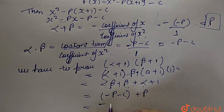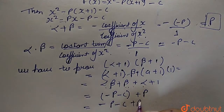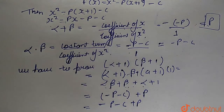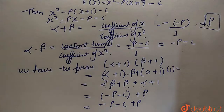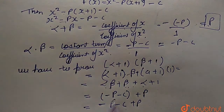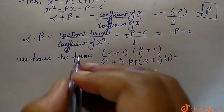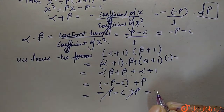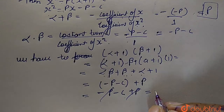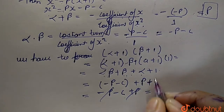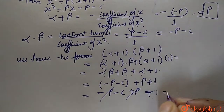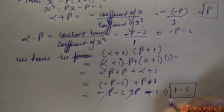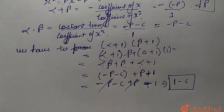The value of alpha plus beta is p, so p and minus p cancel each other out. We are left with plus 1, so the final value is 1 minus c. This is the correct answer for this question.